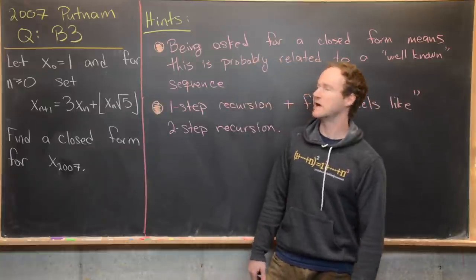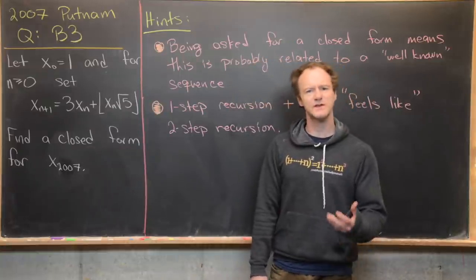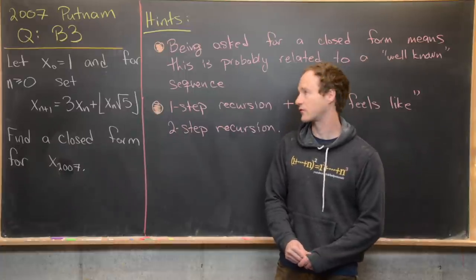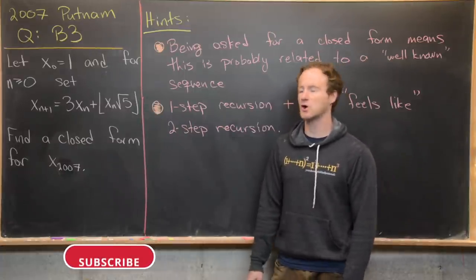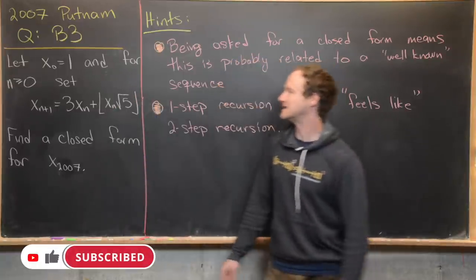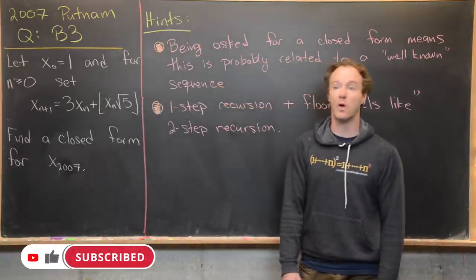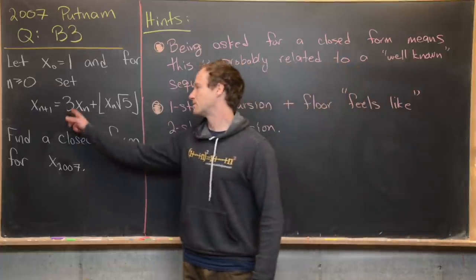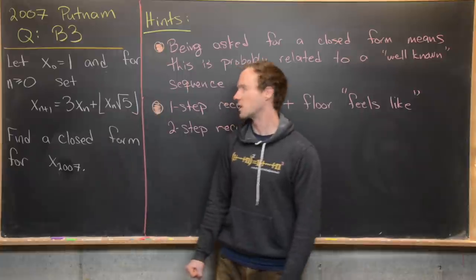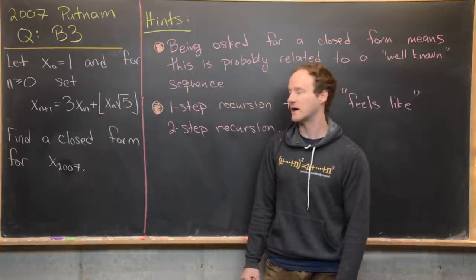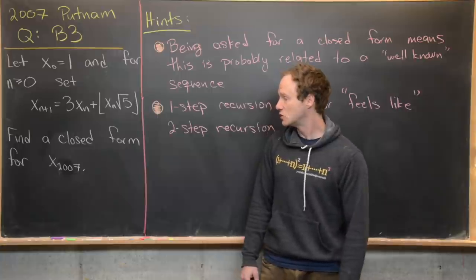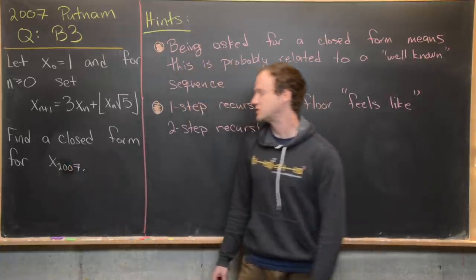Here we're going to look at a nice problem from the Putnam exam — the 2007 edition, question B3. It has to do with a recursively defined sequence. We want x₀ equal to 1 and then xₙ₊₁ equal to 3xₙ plus the floor of xₙ times the square root of 5. Our goal is to find a closed form for x sub 2007.